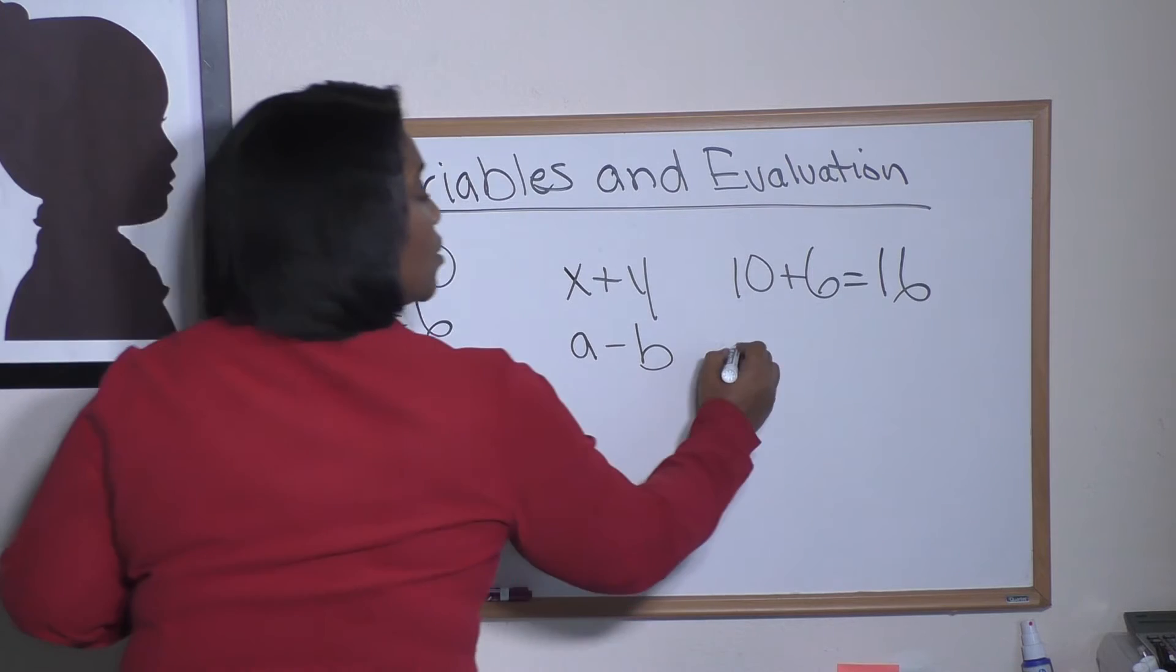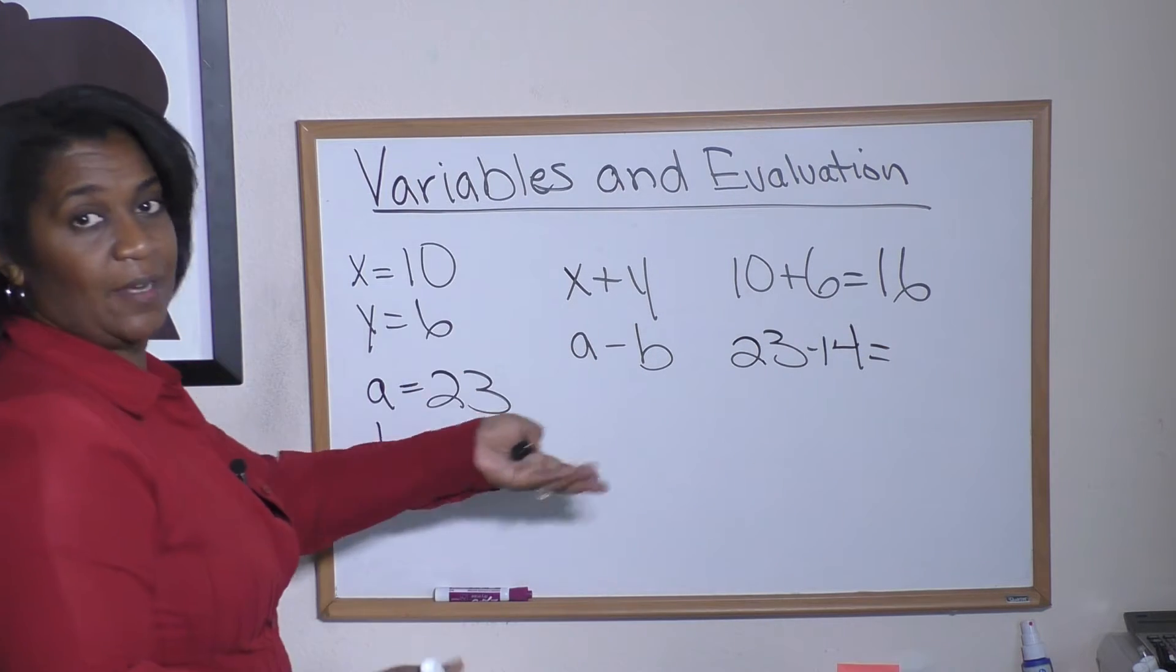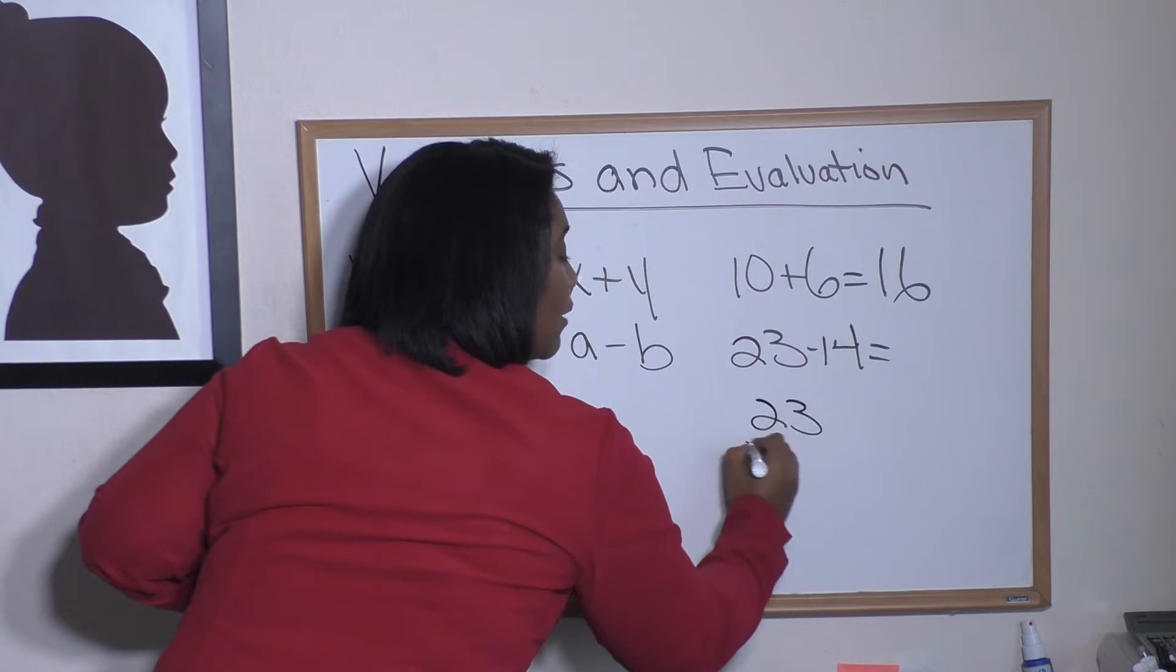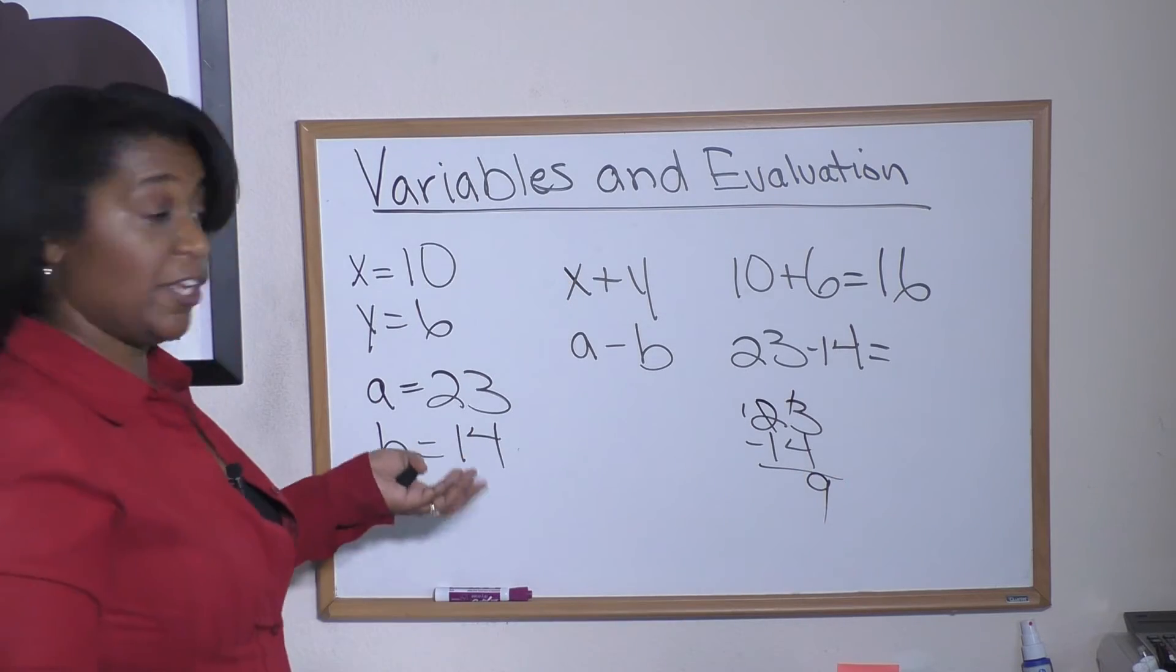Let's try it: 23 minus 14. And again, if you don't know how to do that in your head, it's easy to go ahead and just write it down. I'm all for writing things down, and the answer would be 9.